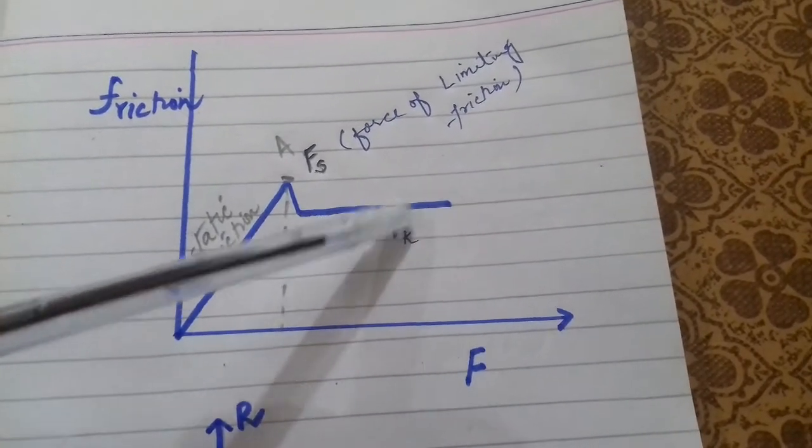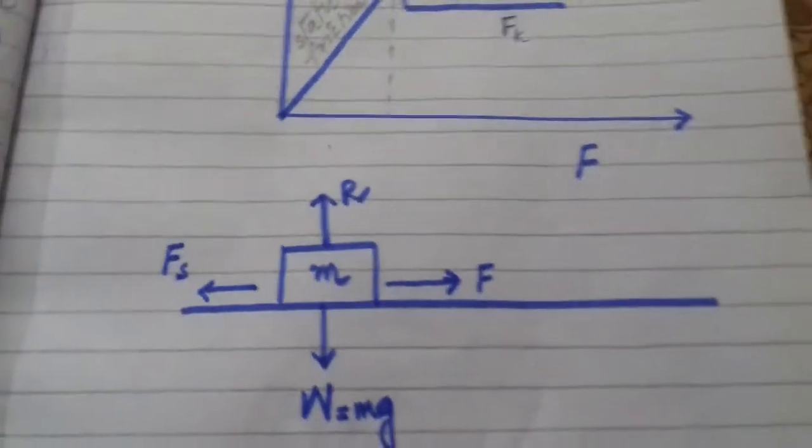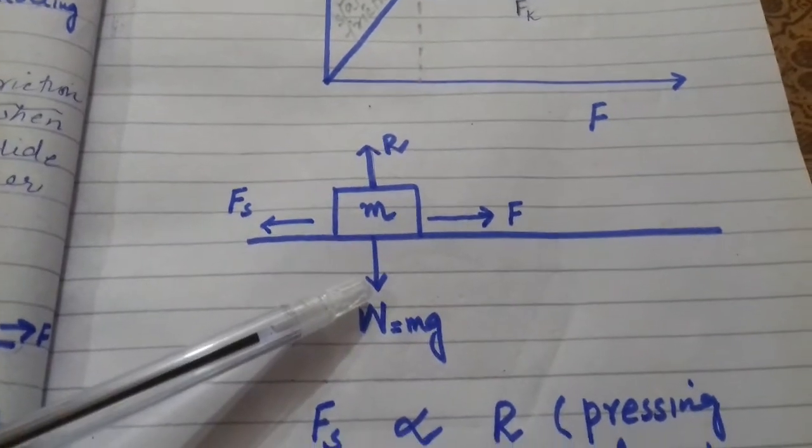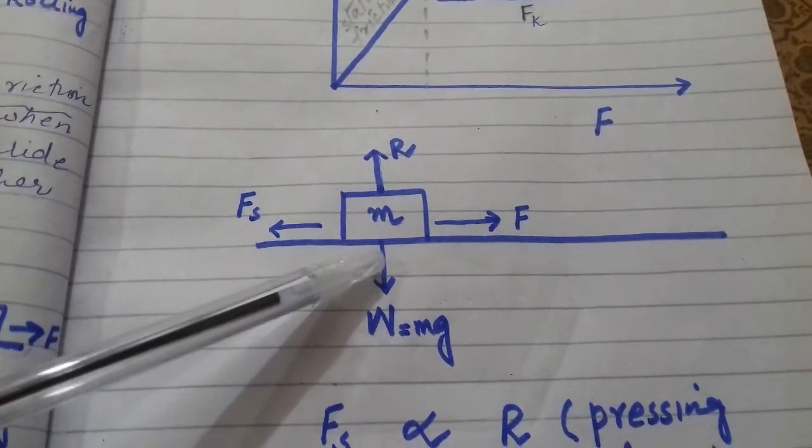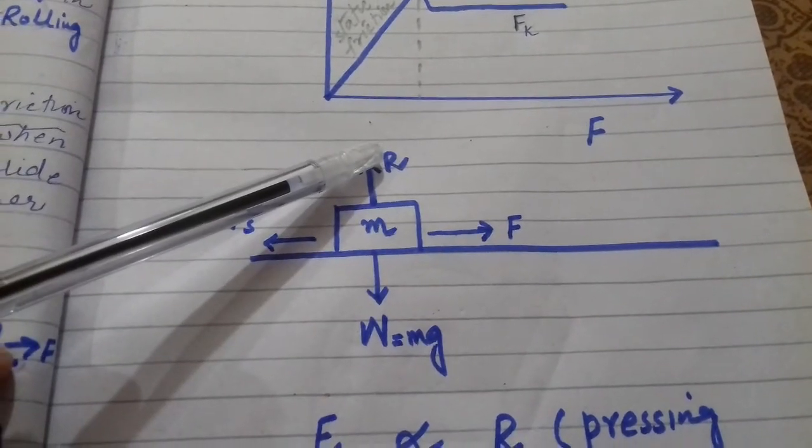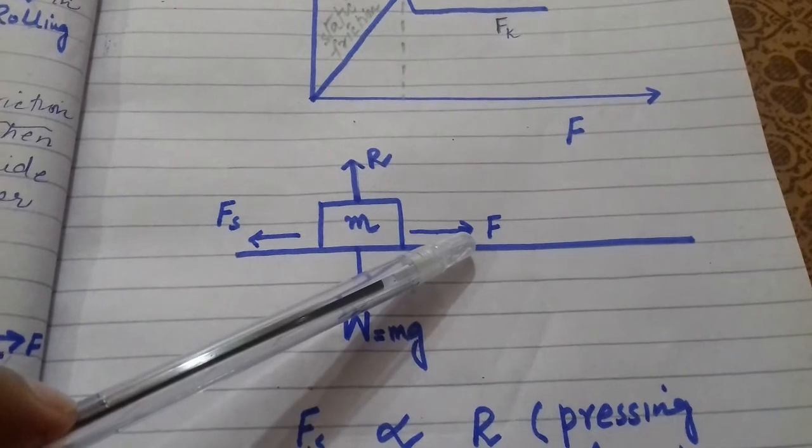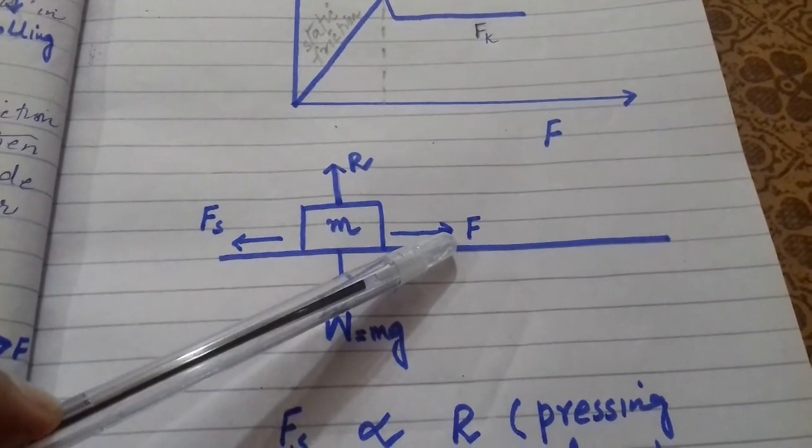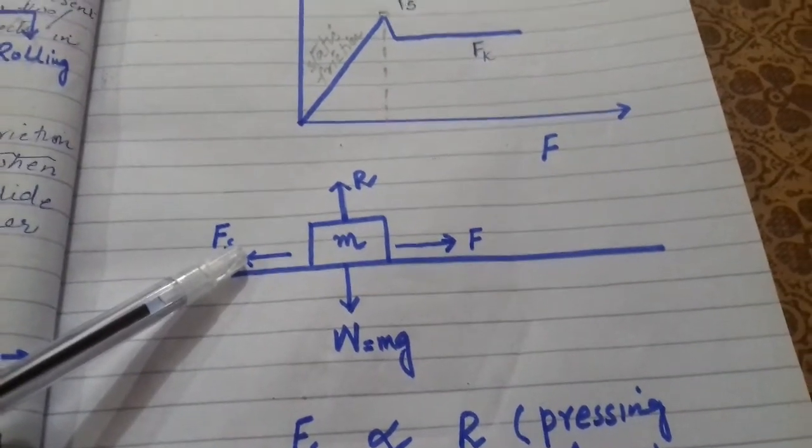The weight of the body W equals mg. This mg is balanced by the normal reaction R. We've applied a force Fs, but it doesn't have enough force to move the body. As we increase the force, the static friction will also increase.